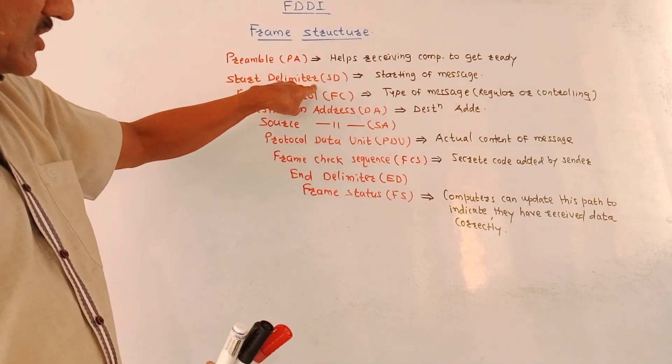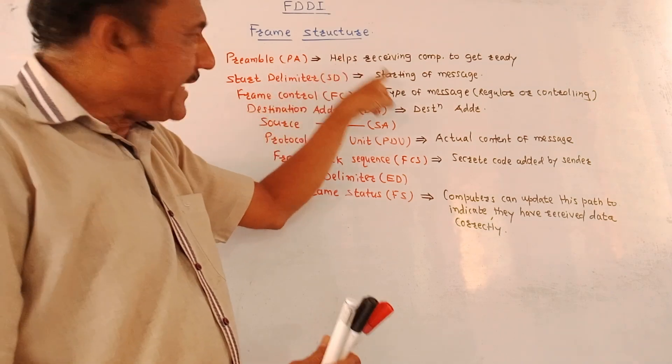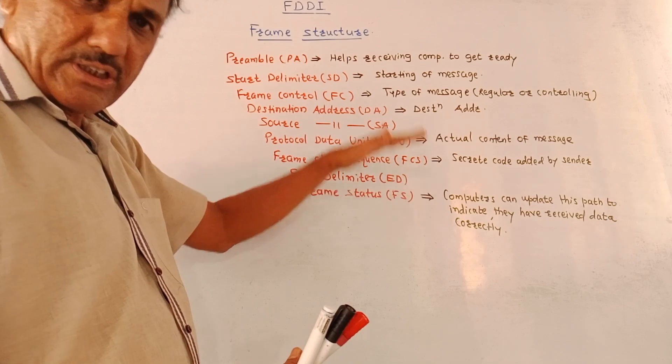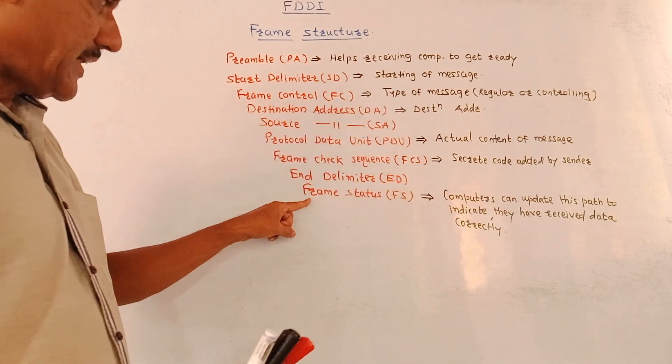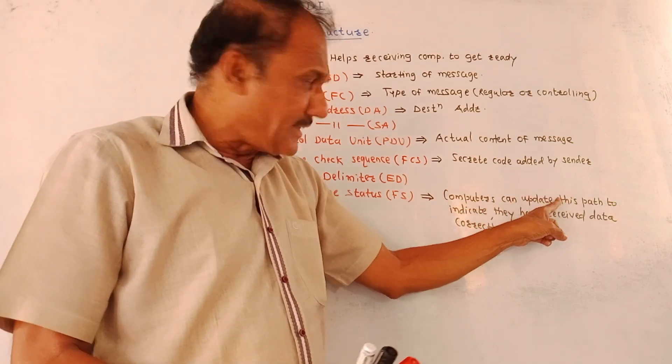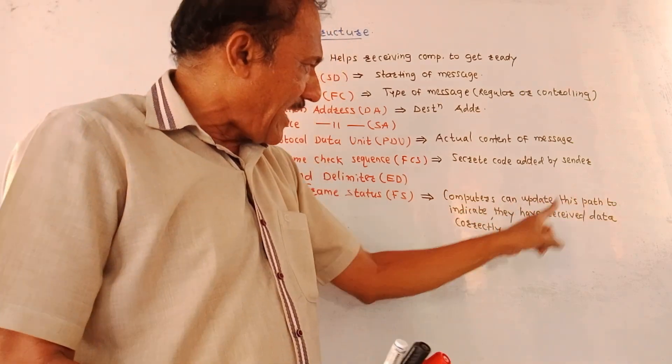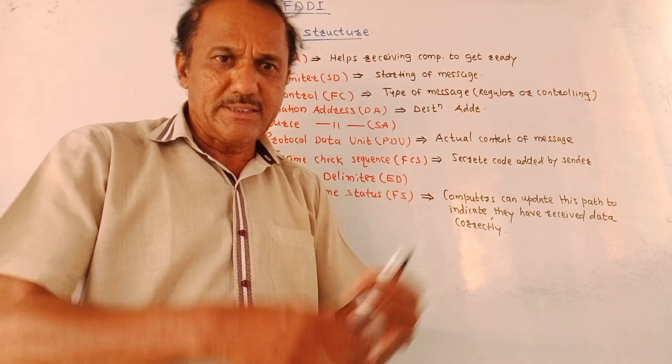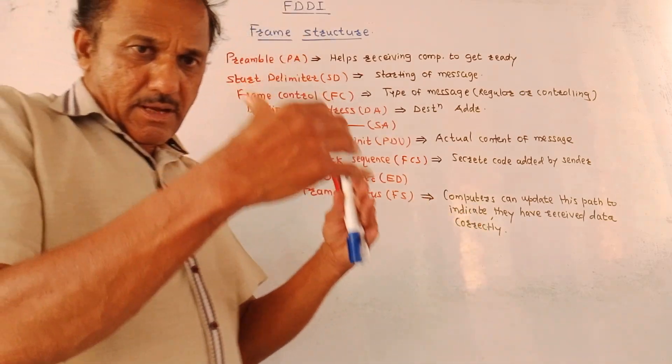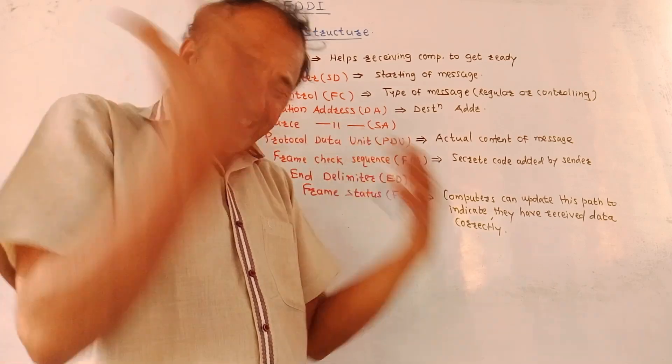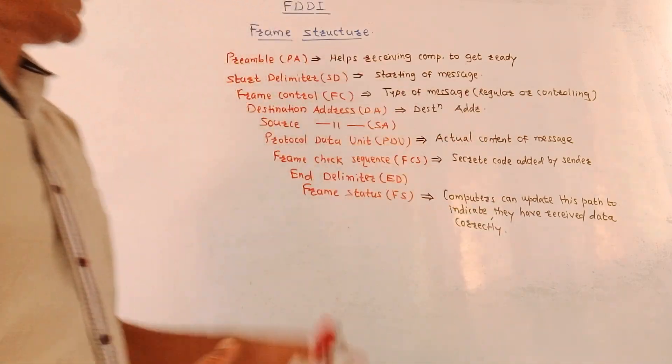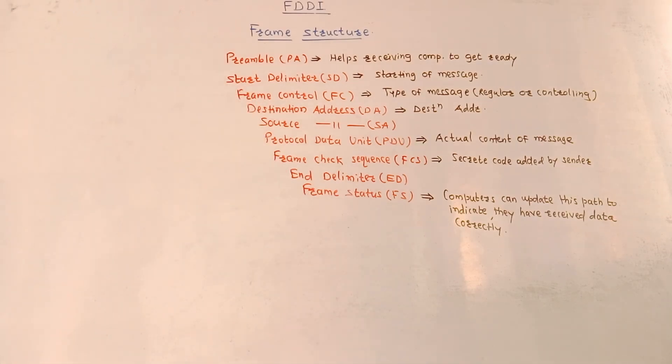Then end delimiter. Similar to the start delimiter. Start delimiter SD gives idea about the starting of message. End delimiter gives the information about ending of the message. Then frame status. Computers can update this part to indicate they have received the data correctly. Means whenever the transmission ends, then computer at the receiver end updates itself to give the indication that they have received the data correctly. So, this is about the frame structure of FDDI.